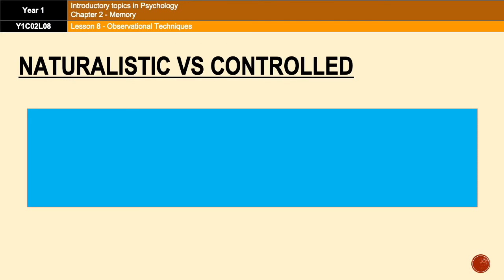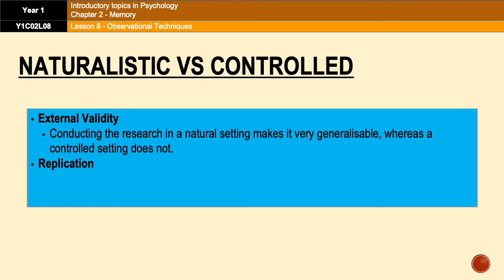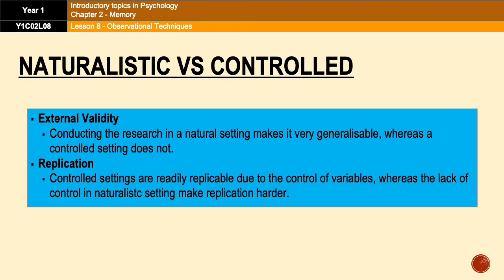Let's look at the evaluation of naturalistic and controlled observations, focusing on external validity and replication. In a naturalistic observation there are high levels of external validity because the research is conducted in a natural setting, giving us insight into how behavior occurs in the real world. However, naturalistic settings are very hard to replicate due to the many variables that can't be controlled. Controlled observations, on the other hand, are very readily replicable because they allow greater control over variables. However, that increase in control comes with a lack of external validity. So naturalistic observations have good external validity but are hard to replicate, and controlled observations have the exact opposite — good replication but poor external validity.